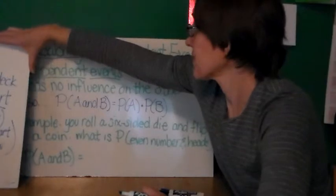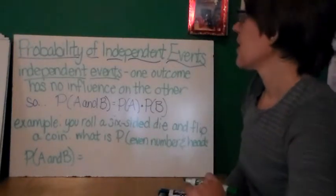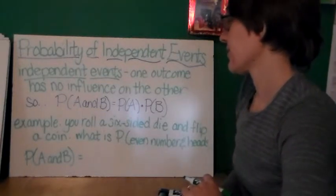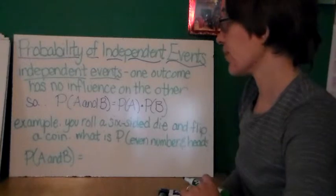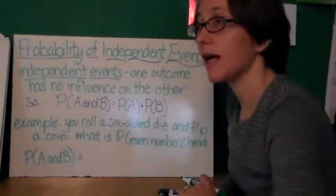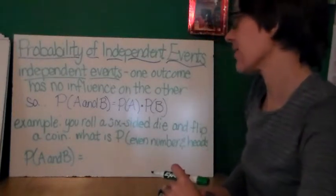And finally, the probability of independent events. So in independent events, one outcome has no influence on the other. So the probability of them both happening together is equal to the probability of one event times the probability of the other. This is kind of similar to fundamental counting principle.